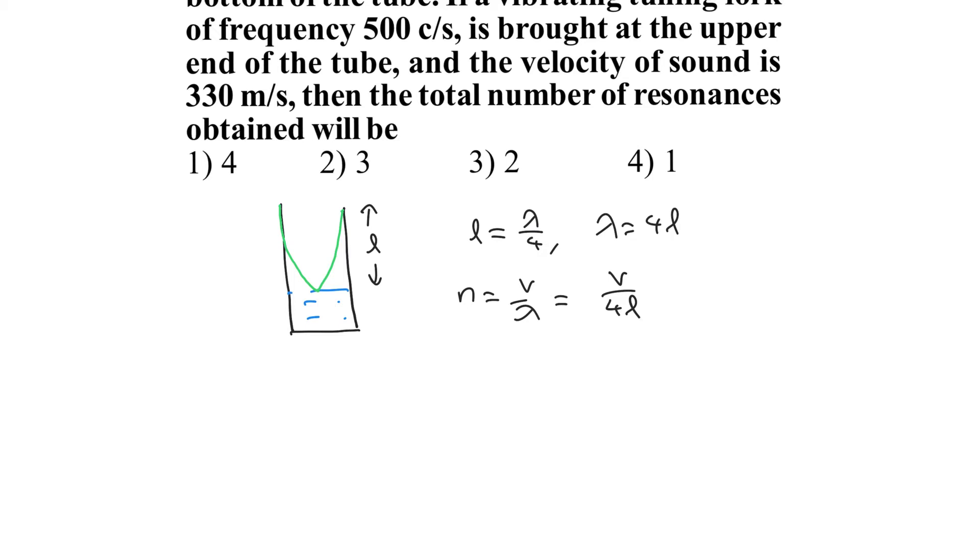We need to find out the total number of resonances obtained. For nth resonance we can write it should be 2N minus 1 into V divided by 4L, which should be equal to 500.